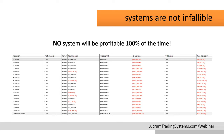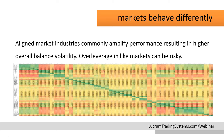Because I've worked with the system, I know the logic is sound. I've grown the system out and developed that confidence knowing it's not a fluke — I'm not only diversified in having multiple systems, but I'm also diversified in having a portfolio of different futures markets. The two biggest losers here are the ES and YM. Markets behave differently, and aligned market industries commonly amplify performance, resulting in higher overall balance volatility. Over-leverage in like markets can be risky.